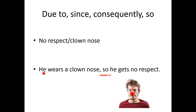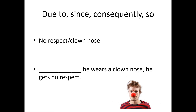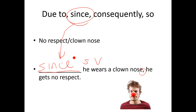This one I already did: I have 'he wears a clown nose' — a complete idea — and 'he gets no respect' — another complete idea — and if those are one sentence, I can join them with a comma plus 'so': the cause and then the result. For the last blank at the beginning: '[blank] he wears a clown nose, comma, he gets no respect.' In this situation I need a subordinator — 'since.' Since he wears a clown nose, he gets no respect.